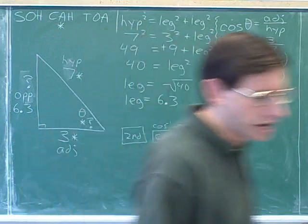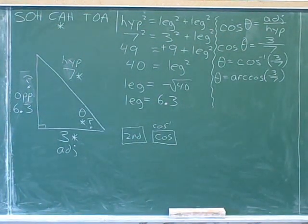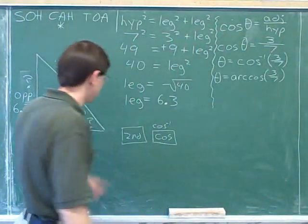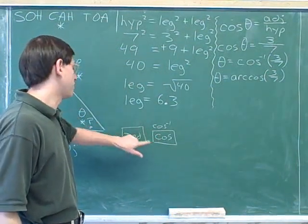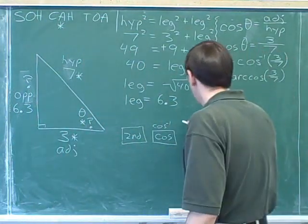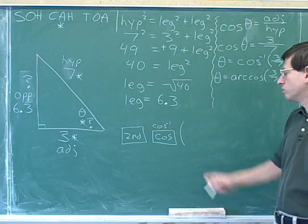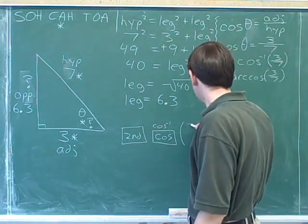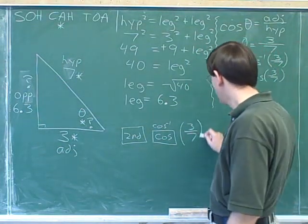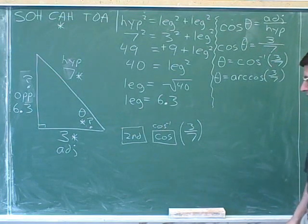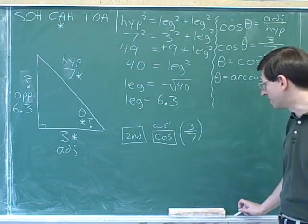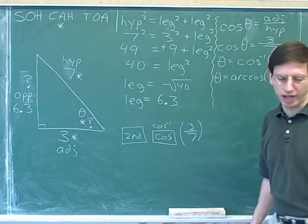On a TI-83 or 84 calculator, you hit the second button. Then you hit the cosine button, and because you hit second first, you're going to get the inverse cosine, which is printed above that button. A TI-83 or 84 calculator will put the left parenthesis in for you automatically. So then you would type 3 divided by 7. Right parenthesis, and then enter. And that will give you the answer. You need to have parentheses on any calculator here because there's two things that we're taking the inverse cosine of. So this is how you would do it on a TI-83 or 84 calculator. And most other calculators, I think, are pretty similar.